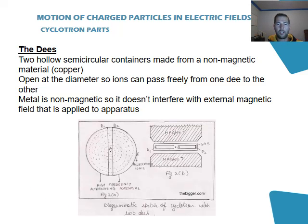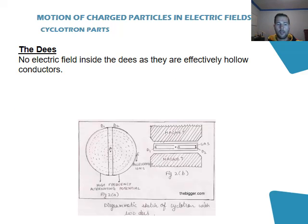The Ds on the cyclotron are two hollow, semicircular containers made from a non-magnetic material. They are open in the center at the diameter, so ions that are accelerated through the cyclotron can pass freely between the two Ds. There is no electric field inside the Ds, as they are effectively hollow conductors.